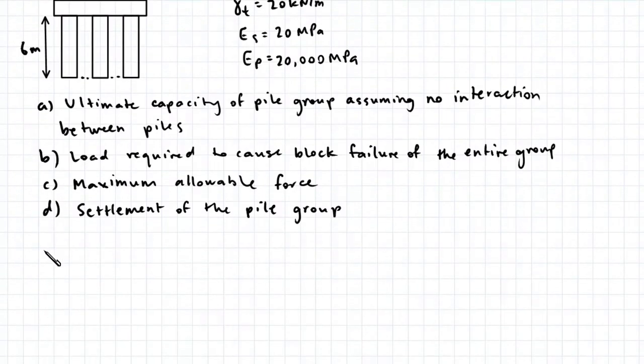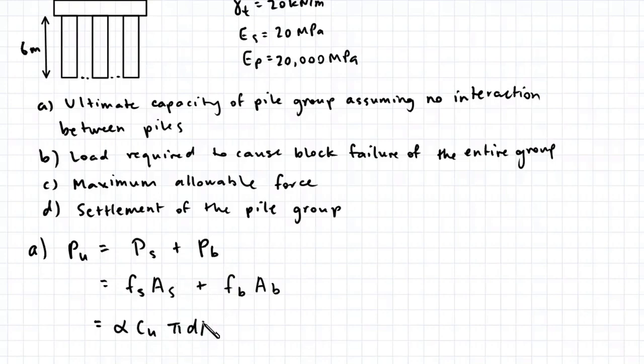Let's start with part A. The ultimate capacity of one pile, Pu, is equal to the sum of the total shaft resistance and the total base resistance. These terms can be expanded to FsAs, the shaft resistance multiplied by the area of the shaft, plus Fb multiplied by Ab. FsAs can be rewritten as alpha Cu pi DL plus Fb can be rewritten as Cub multiplied by Nc and the area of the base.